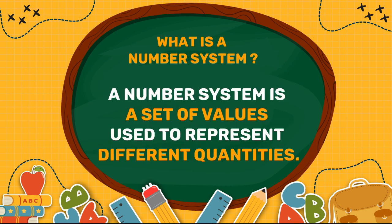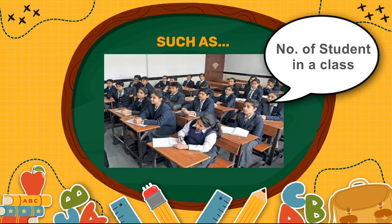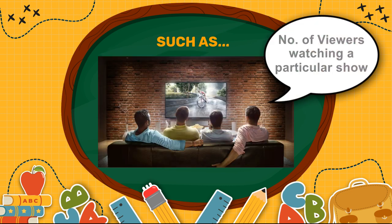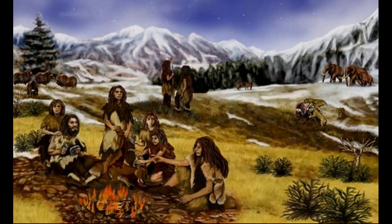What is number system? A number system is a set of values used to represent different quantities, such as the number of students in a class or the number of viewers watching a particular show.